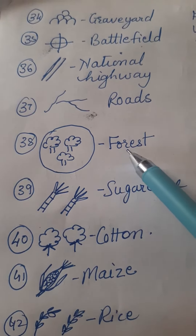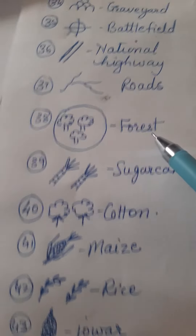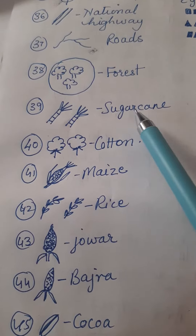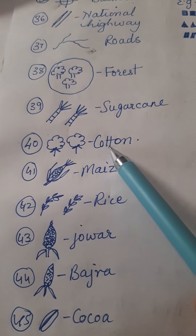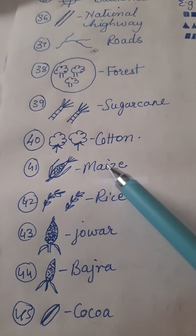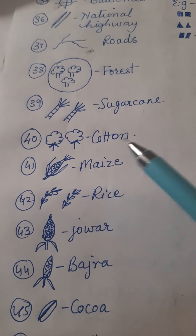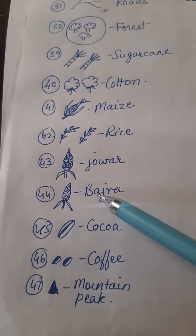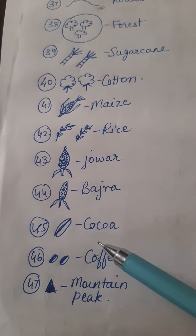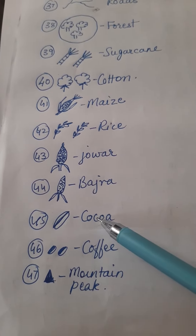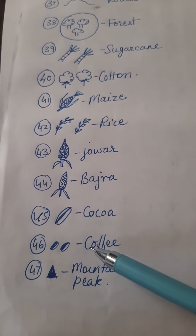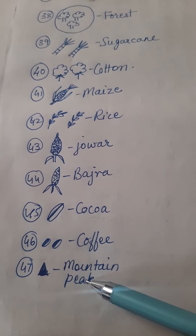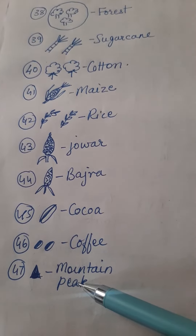This is used to show the forest. For sugar cane, this sign is used. This is cotton, maize, rice, jawar, bajra. For cocoa, this sign. For coffee, for mountain peak, just draw a triangle.